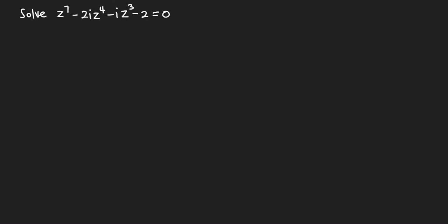Hello, welcome to this lesson. In this video you are going to solve this question on the screen, which says we should solve z to the power seven minus two i z to the power four minus i z to the power three minus two equals zero. So let's look at what we are going to do. I have the equation: z⁷ - 2i·z⁴ - i·z³ - 2 = 0.